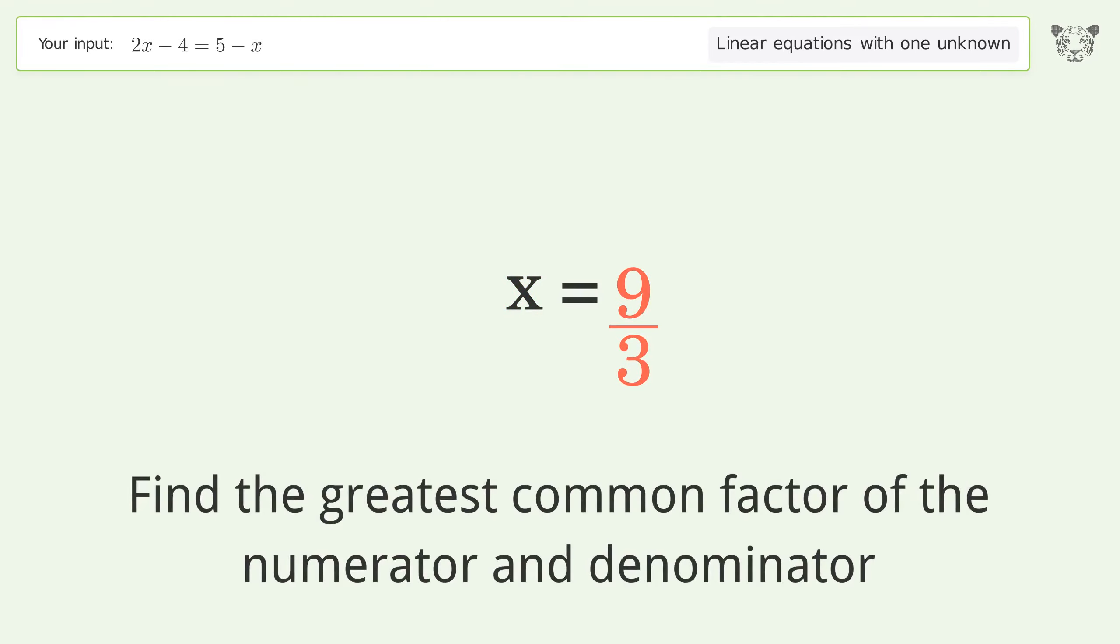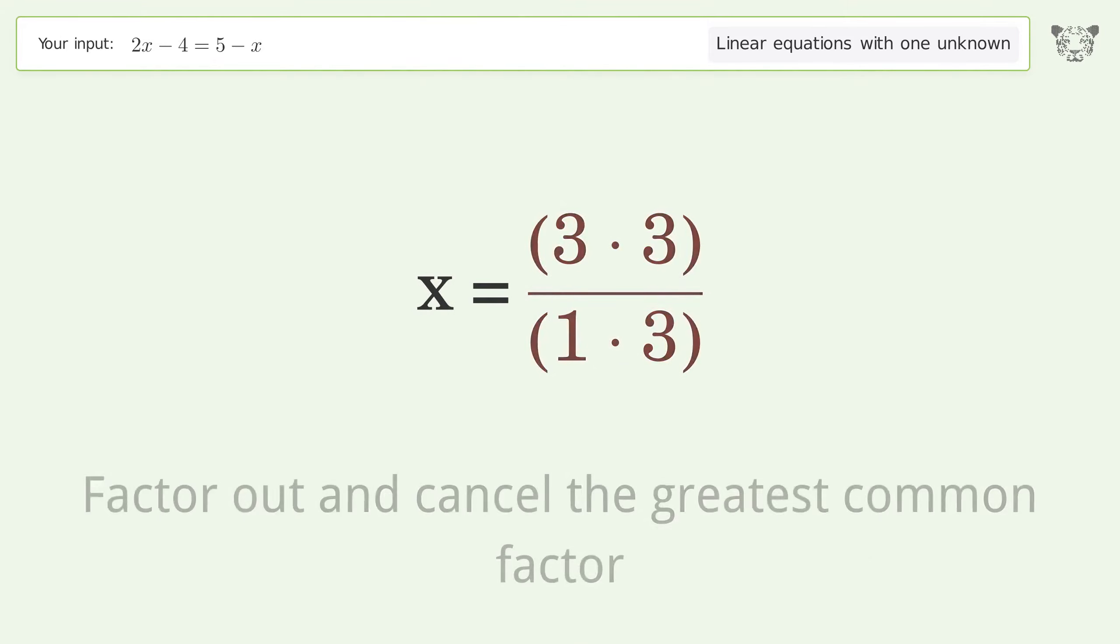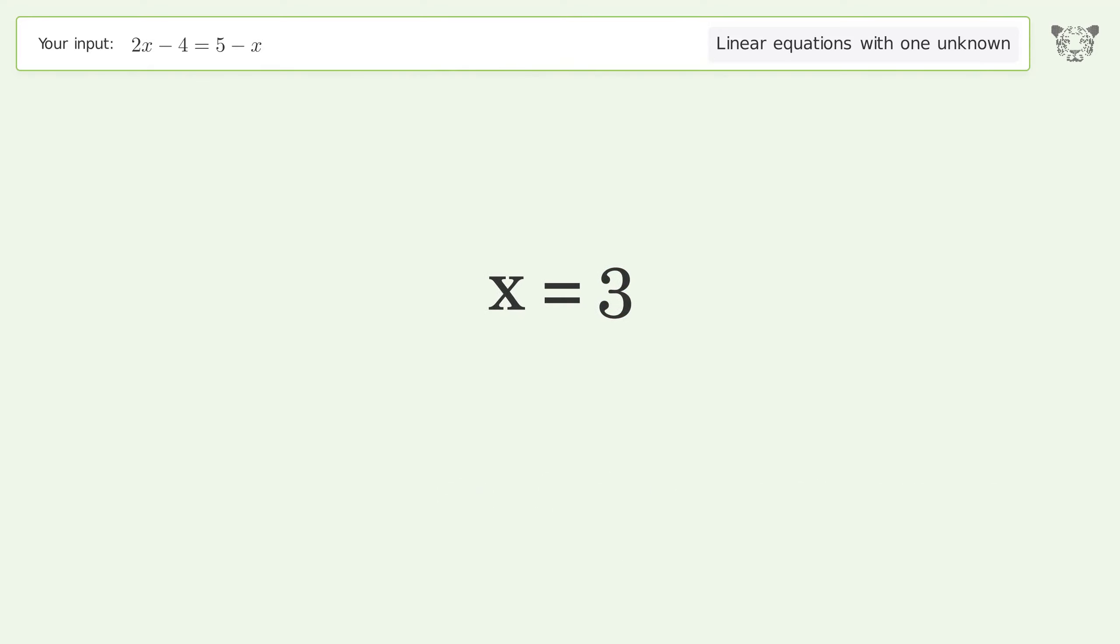Find the greatest common factor of the numerator and denominator. Factor out and cancel the greatest common factor. And so the final result is x equals 3.